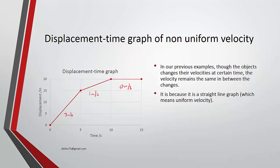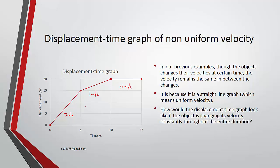The velocity changes at a specific point but does not change in between. The next question is: how would a displacement-time graph look if the object is constantly changing its velocity throughout — not remaining at 3, but always changing? This is what we will explore next.